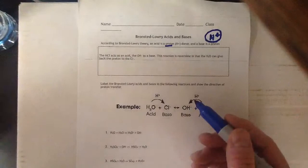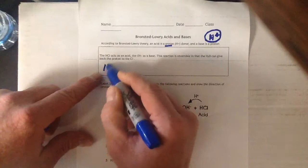The H+ is the currency. Someone takes it and someone gives it. In Bronsted-Lowry, it's about transfer of that proton, H+, the definition of an acid-base reaction.